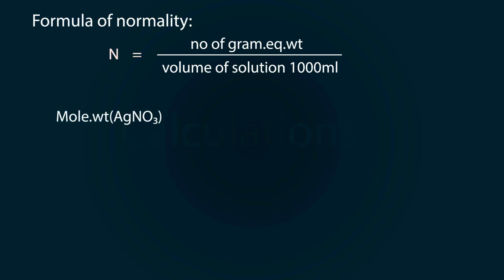Let's do some calculations. We have to find out the normality of silver nitrate. Normality is equal to number of gram equivalent weight divided by volume of solution which is 1000 ml.